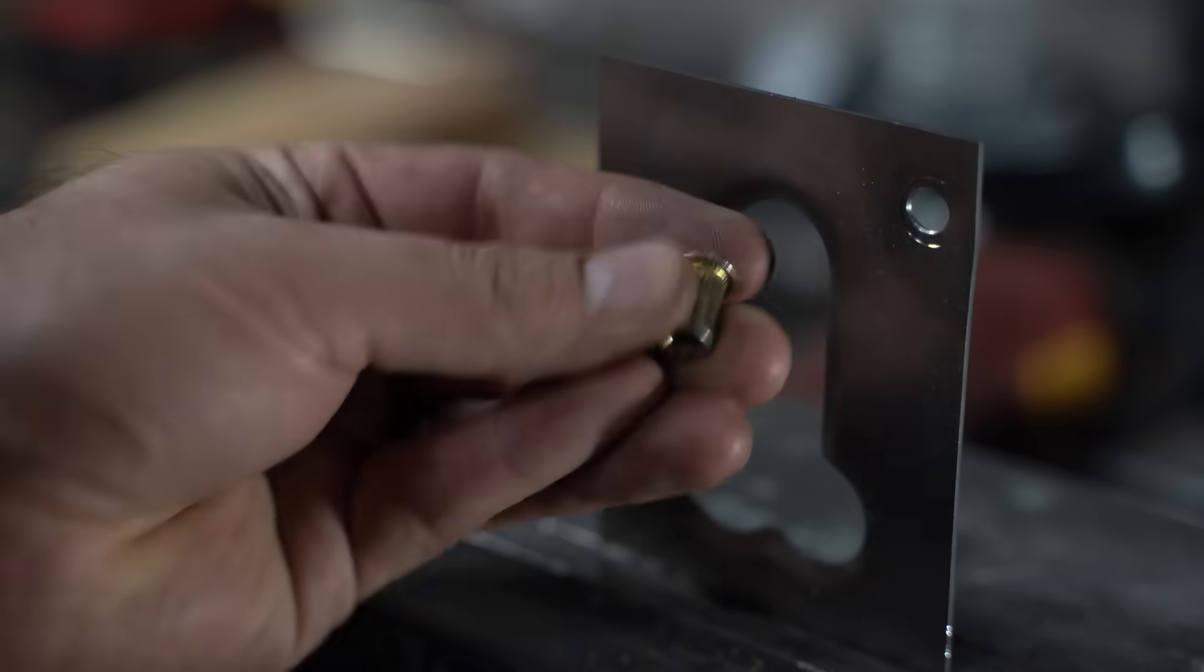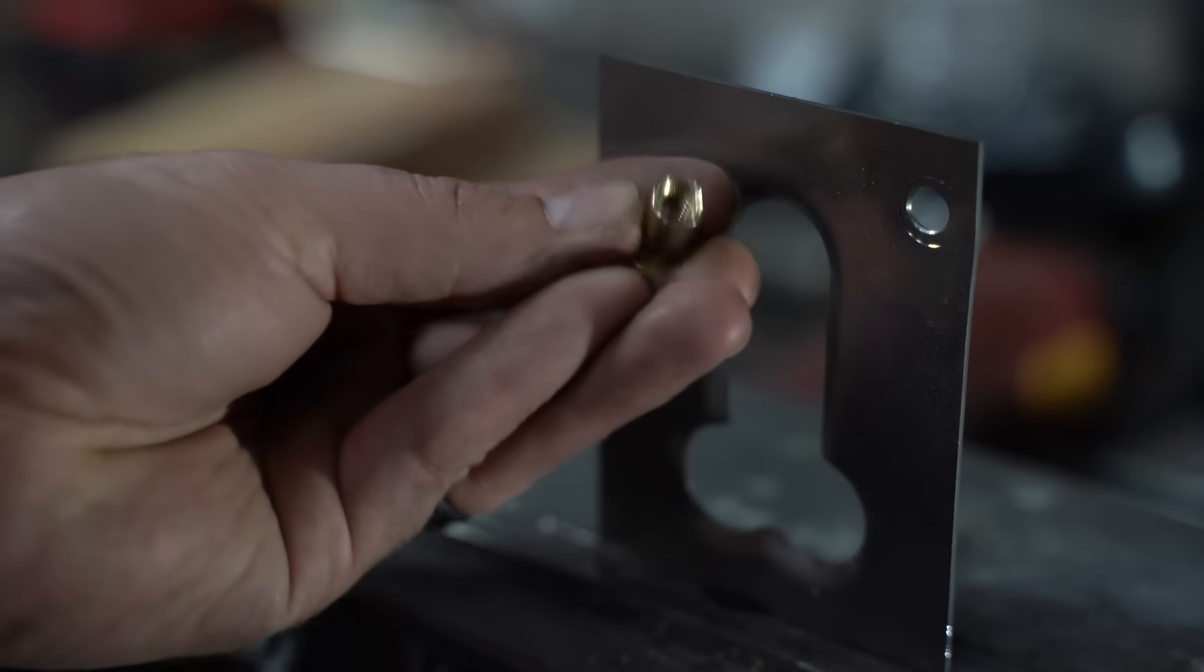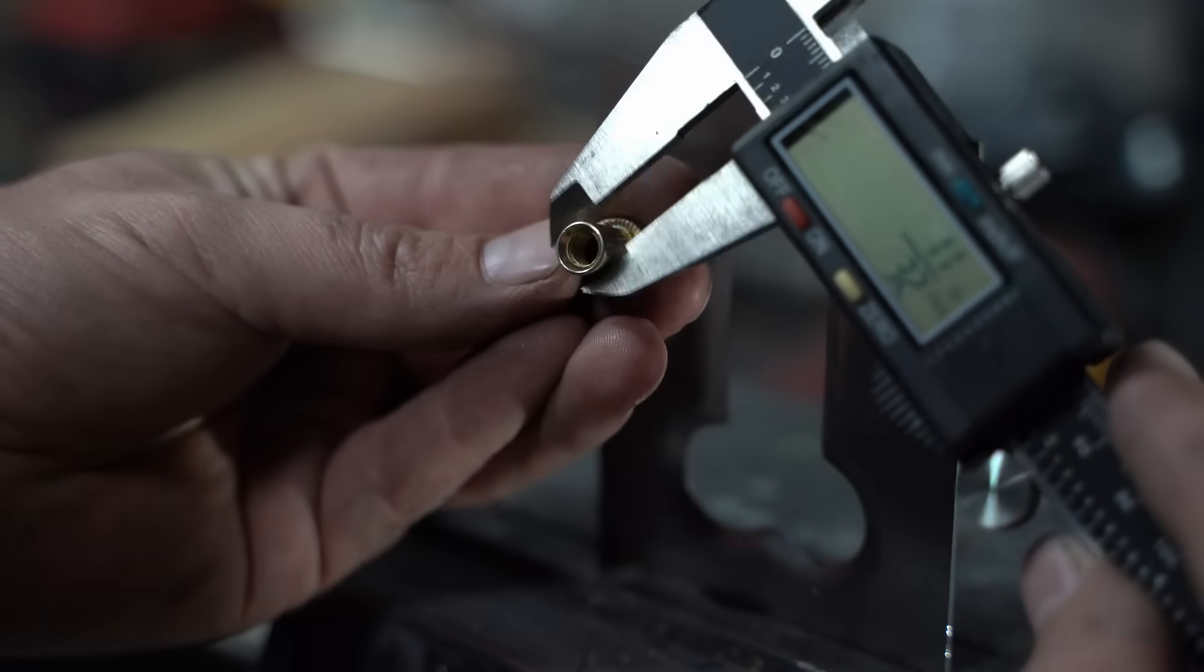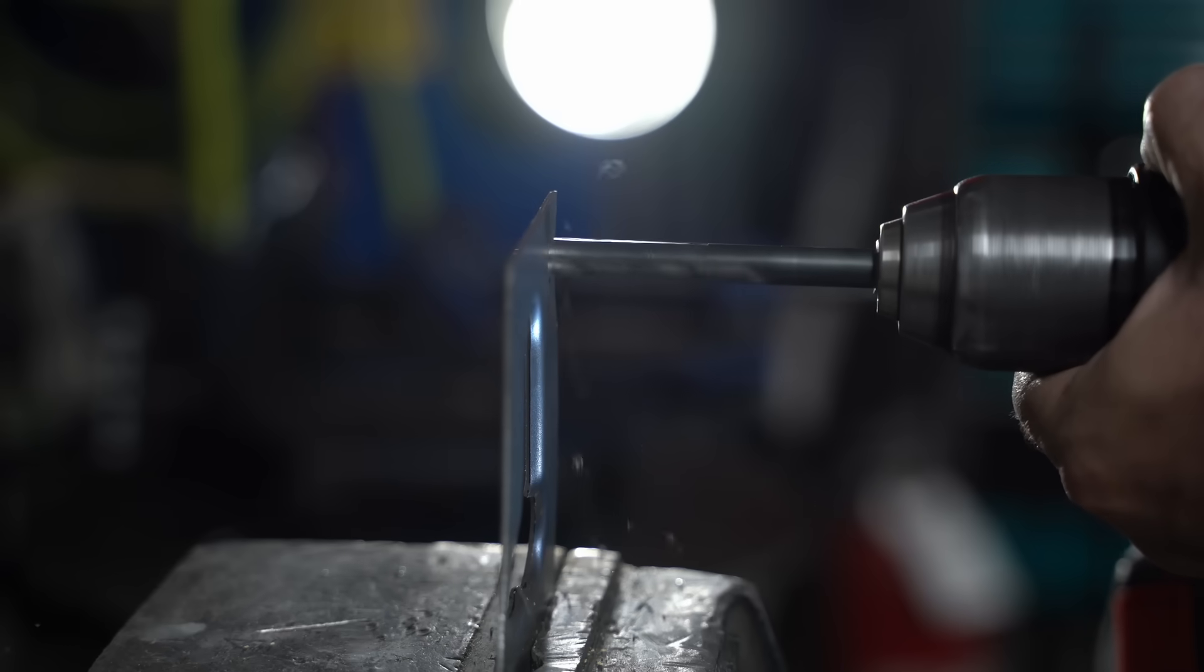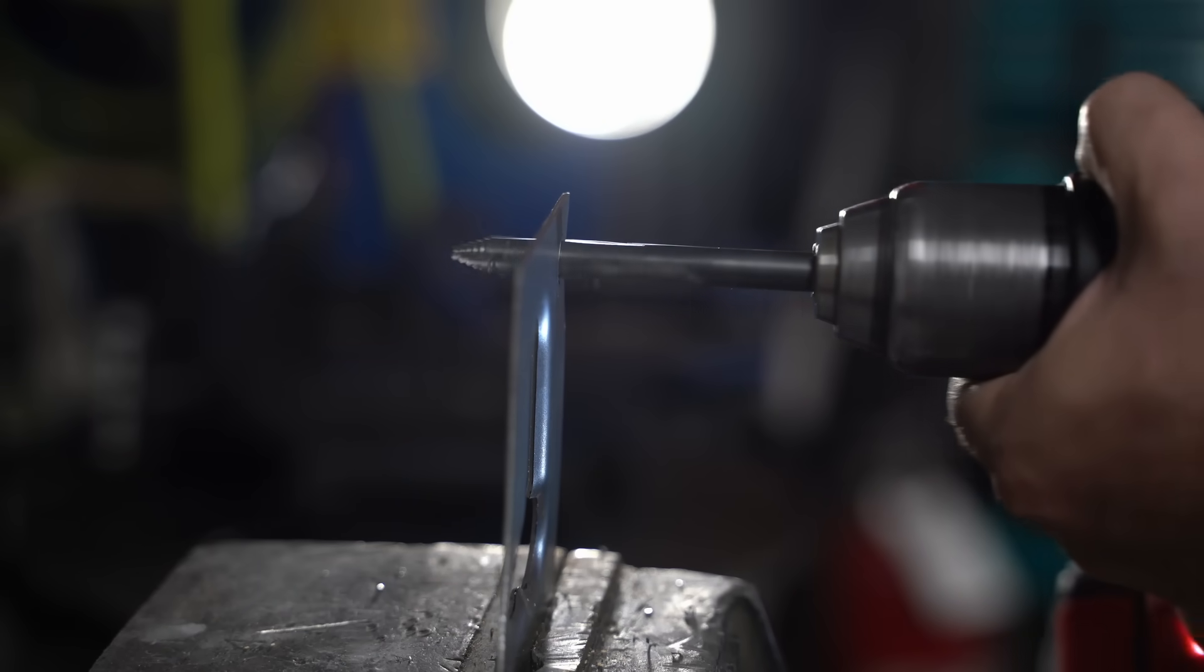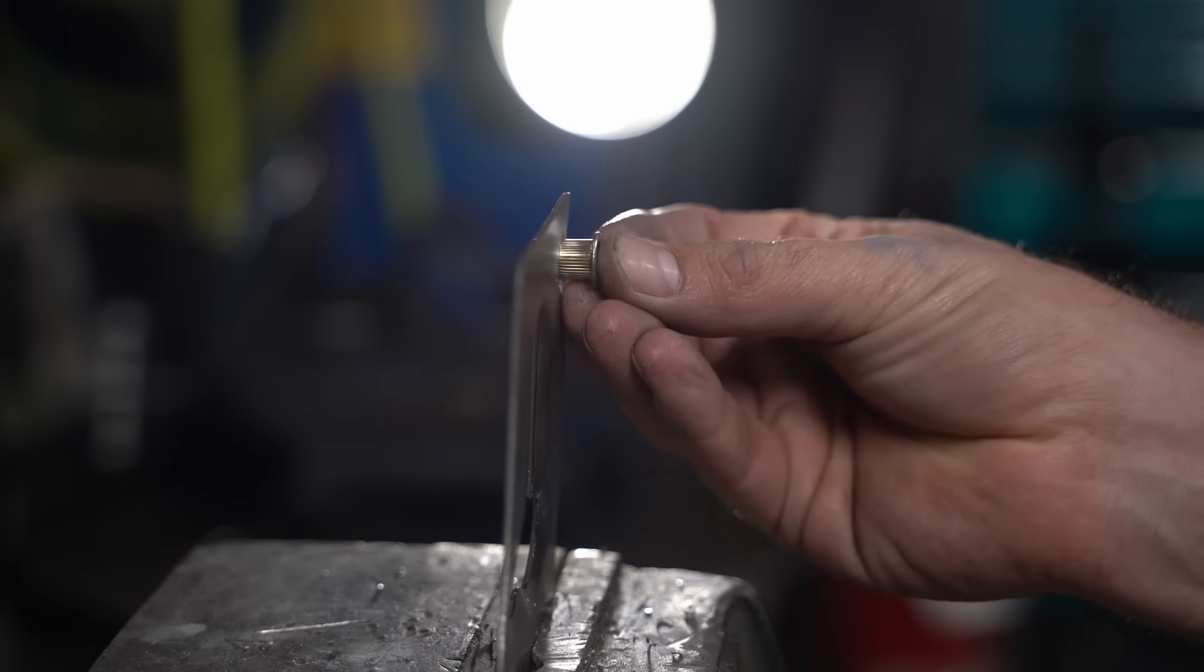In thin material not near an edge, actually I'd use it near an edge too, my favorite option is the rivnut, or the nutsert, or the threadsert. These require a special tool, unfortunately, but it's super worth it.